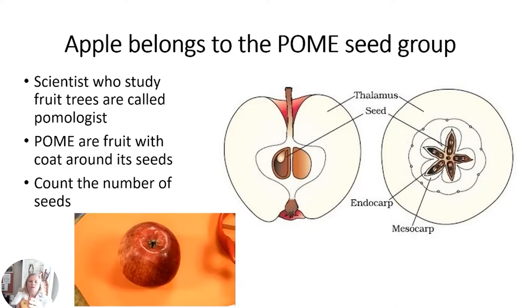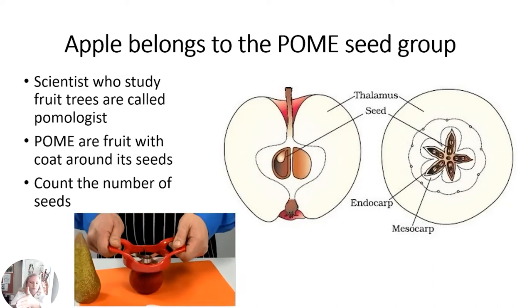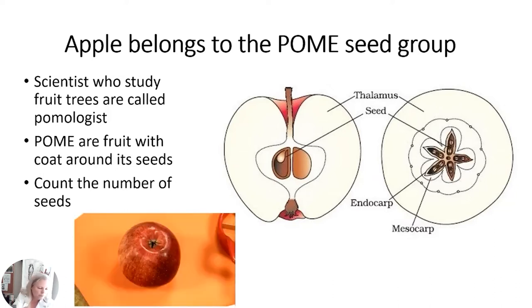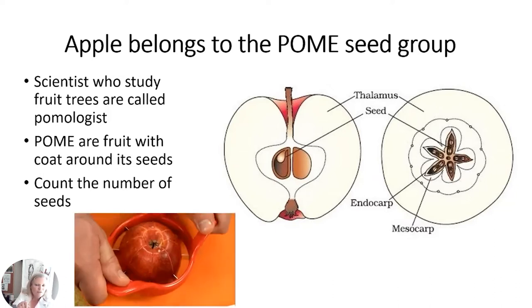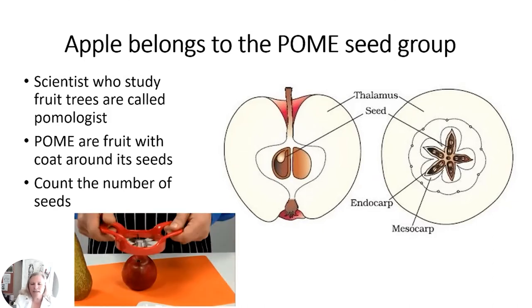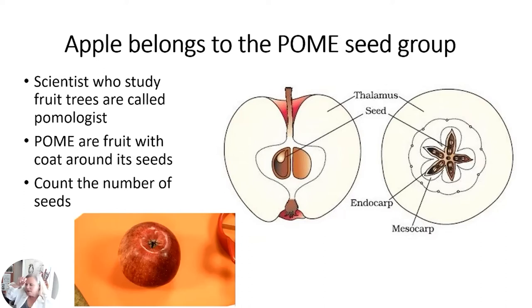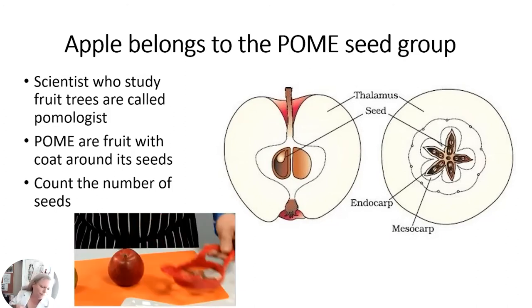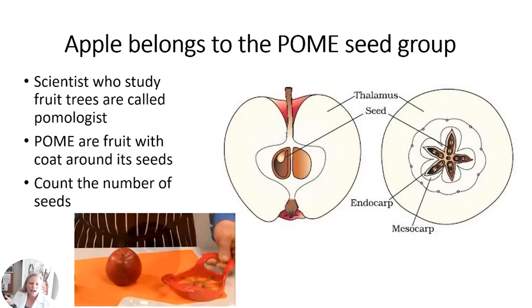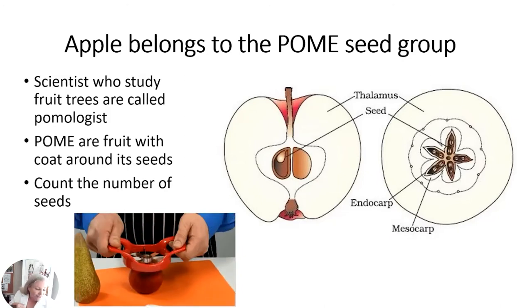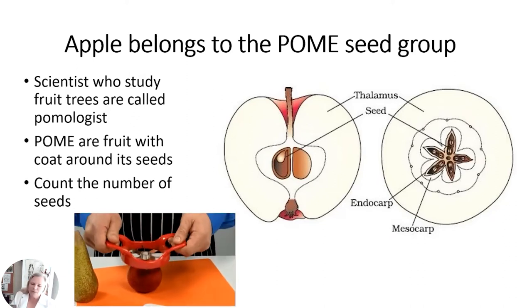You see how that seed is protected by the hard endocarp — we usually cut that out. A horse, cow, or deer will eat the whole core — they put the whole apple in their mouth — but people don't usually eat the core.